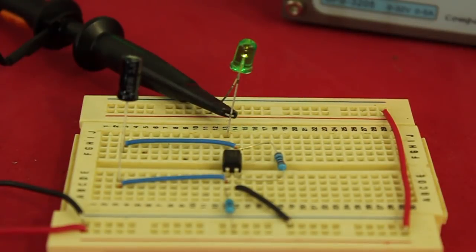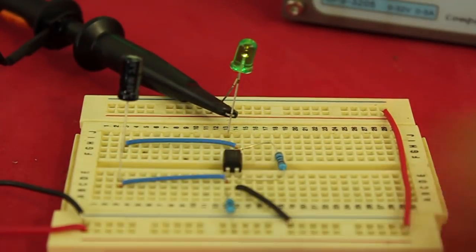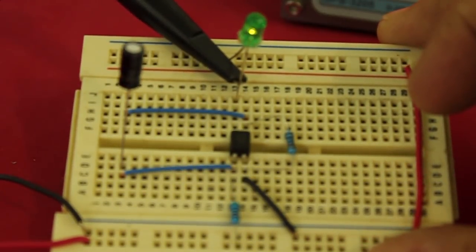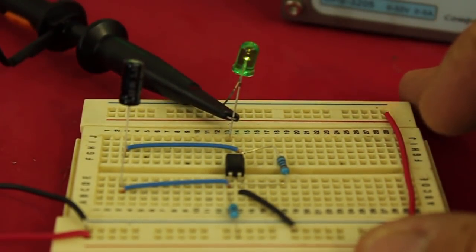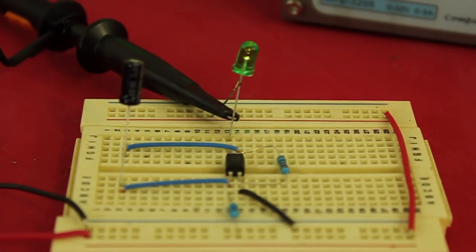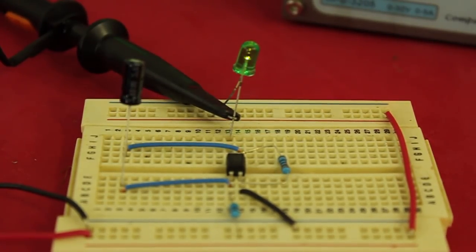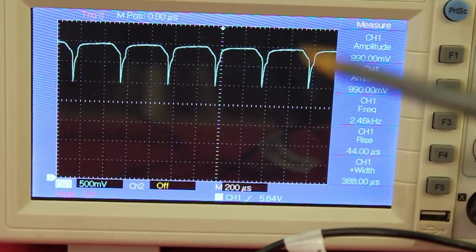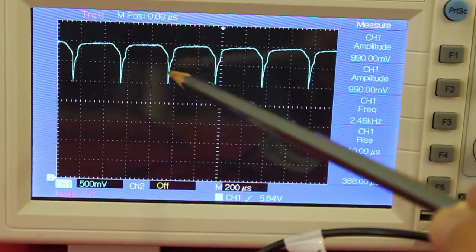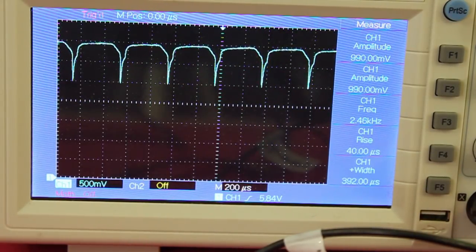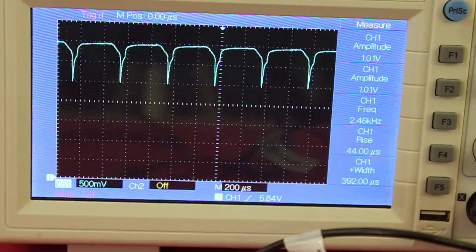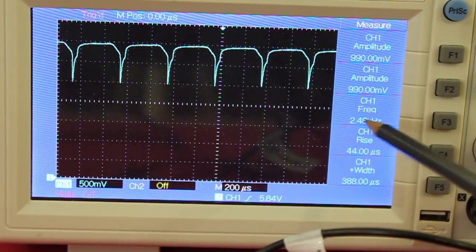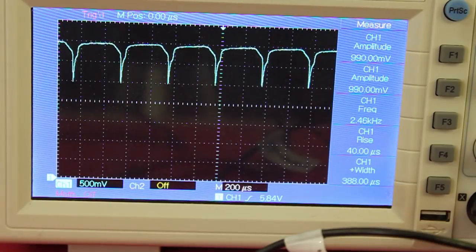With an even smaller capacitor of 0.1 microfarads the LED seems to be always on but that is because the frequency is too high and the human eye cannot detect the flashing. In the oscilloscope we can see the pulses generated by the oscillator and you can see that with this small capacitor of 0.1 microfarads the frequency of oscillation is 2.46 kilohertz.